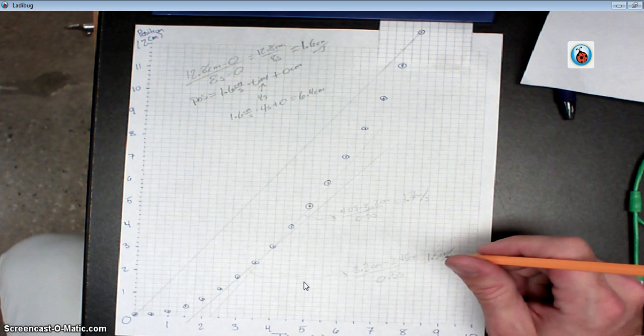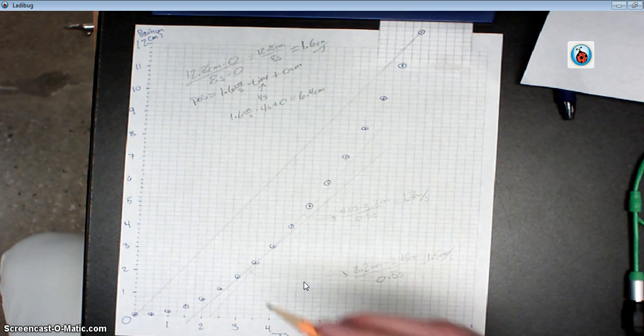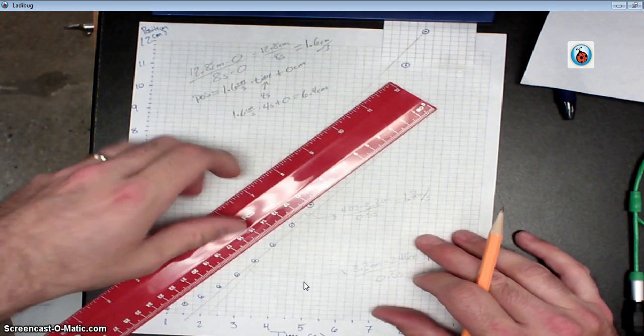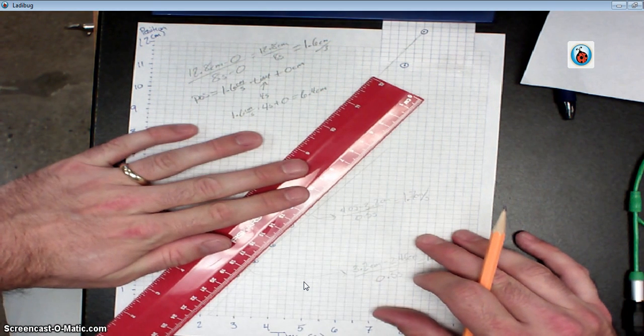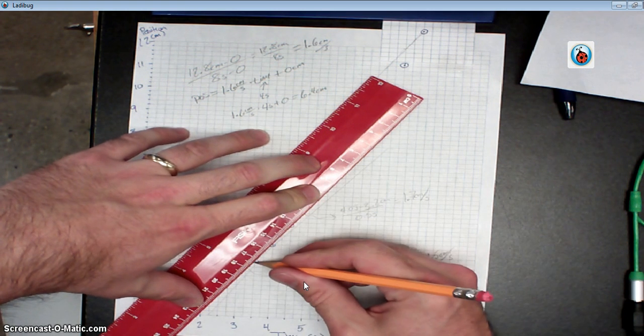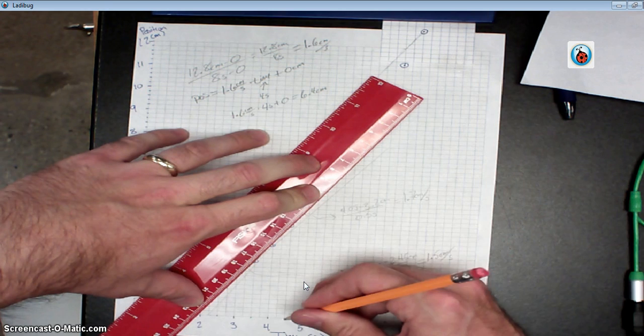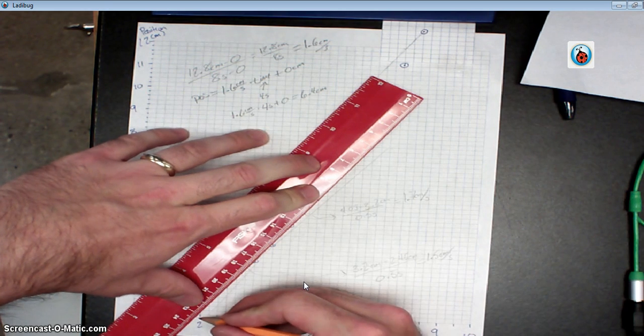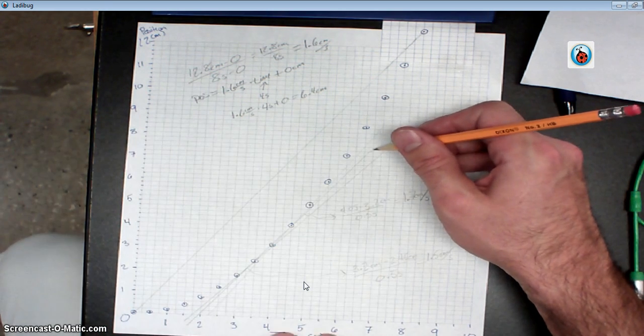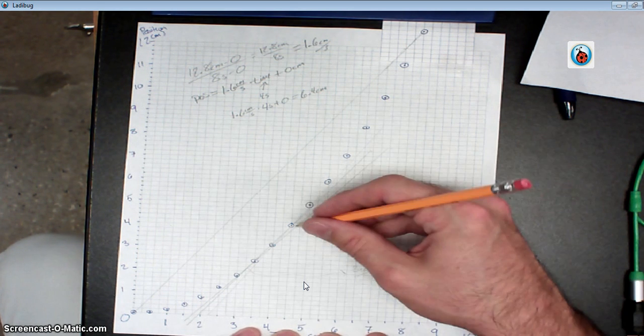So a suggestion here is instead of using just the point before or just the point after to use both. And so if I want to know the slope at 4 seconds, I'm going to use the point at 3.5 seconds and the point at 4.5 seconds. If I draw through those two, not quite splitting the difference in terms of slope, but it's close.